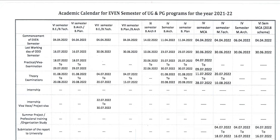Commencement of even semester for B.Tech 6th semester is 4th of April 2022, and for 8th semester the commencement date is also 4th of April 2022. The last date of working for 6th semester is 16th of July 2022, and for 8th semester of B.Tech the last date of working is 30th of June 2022.